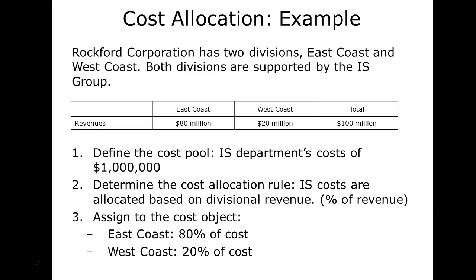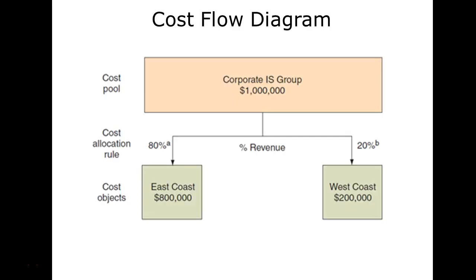Here is a cost allocation example. The cost pool is the information systems department cost at one million dollars. The cost allocation rule is that costs are allocated based on divisional revenue. Total revenue is one hundred million dollars — eighty million for one division and twenty million for another, giving an eighty-twenty split. The one million dollar cost is applied to the two departments based on that allocation rule. Very straightforward.